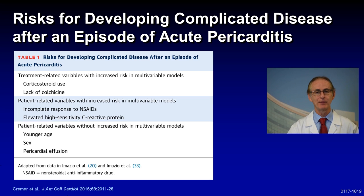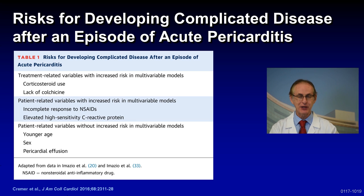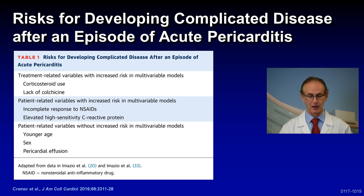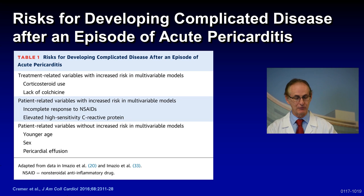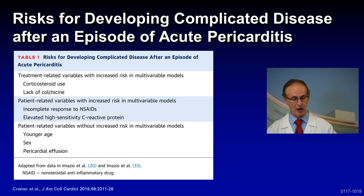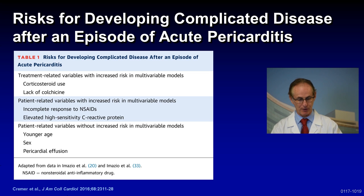What are the risk factors for developing complicated pericarditis after an episode of acute pericarditis? We look at treatment-related and patient-related variables. Treatment-related variables include introducing steroids early or giving high-dose steroids — this could cause problems later — or not giving colchicine. Patient-related variables include inadequate treatment with NSAIDs — not enough aspirin, indomethacin, or ibuprofen — or a very high highly-sensitive CRP, which is a bad prognosticator. Variables without increased risk are age, sex, or pericardial effusion size.